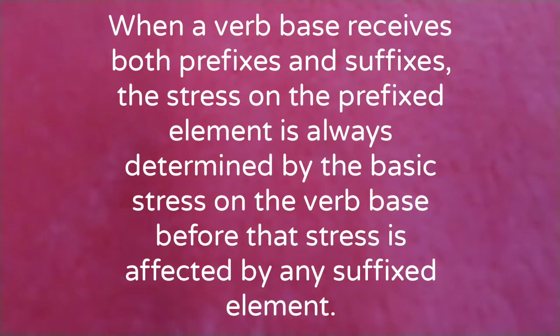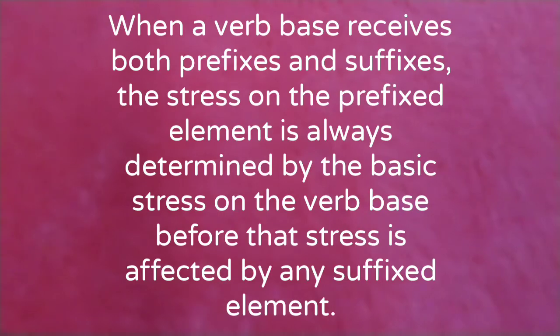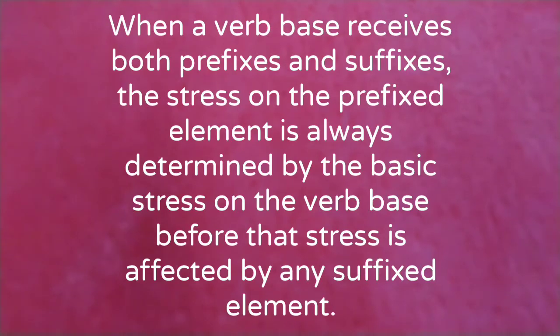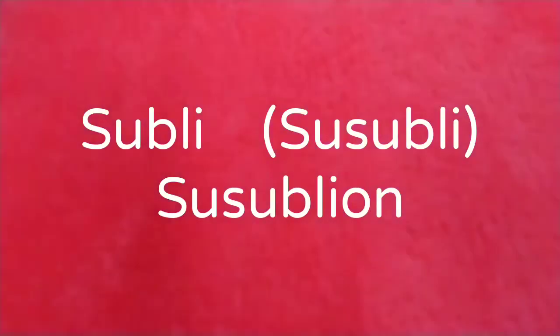When a verb base receives both prefixes and suffixes, the stress on the prefix element is always determined by the basic stress on the verb base before that stress is affected by any suffixed element. For example: a-apod, a-apodun; subli, su-subli, su-subliun.